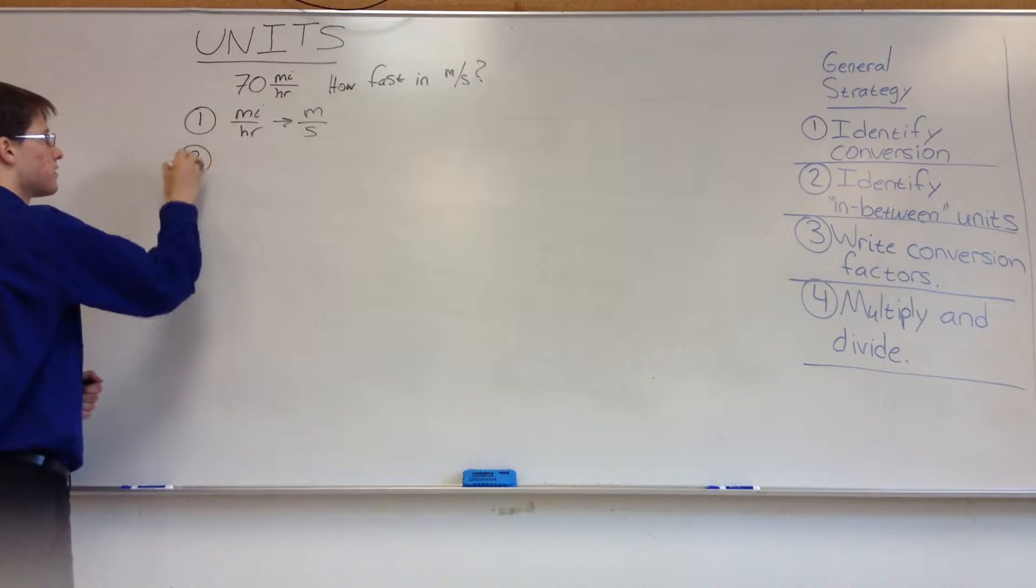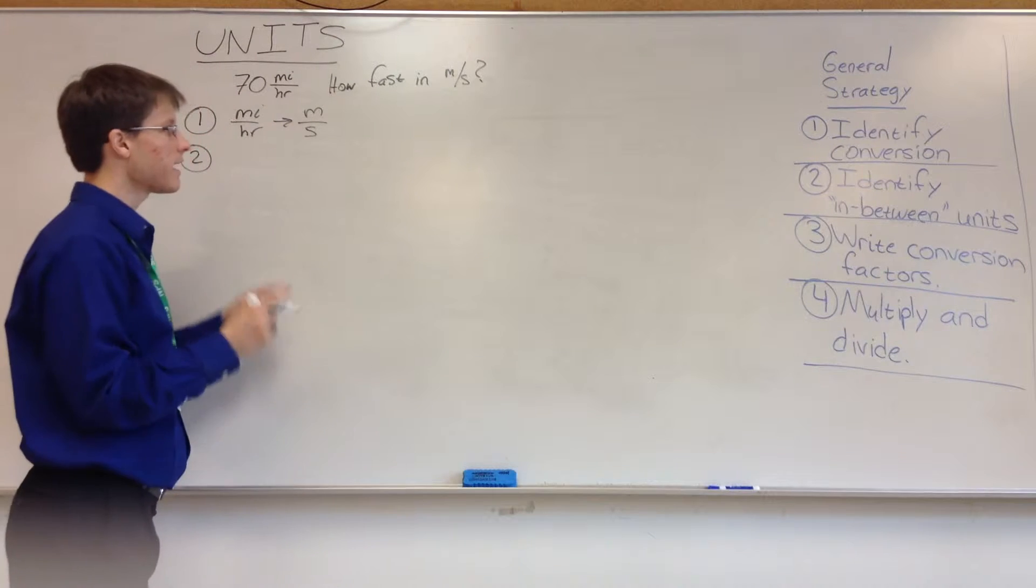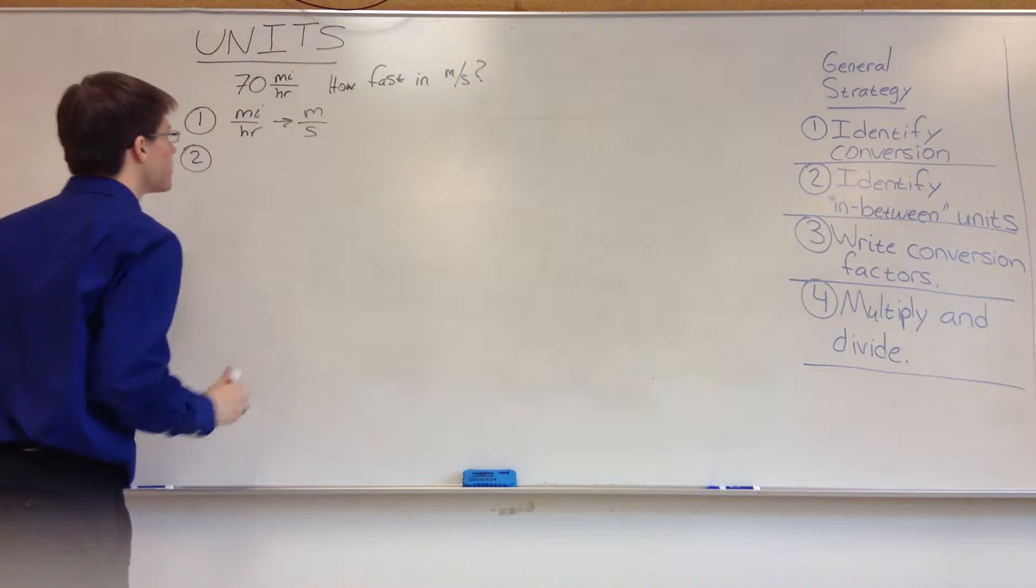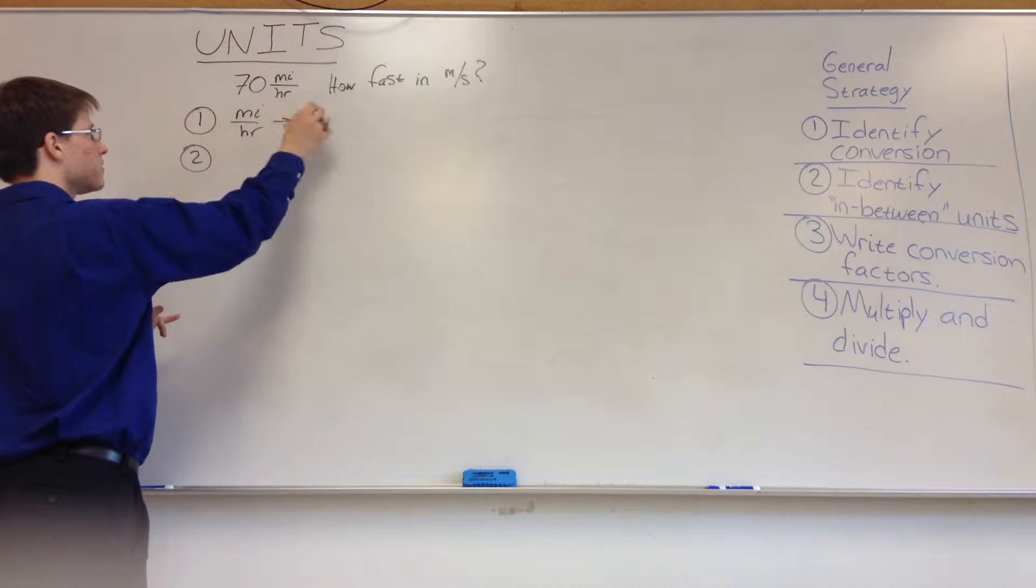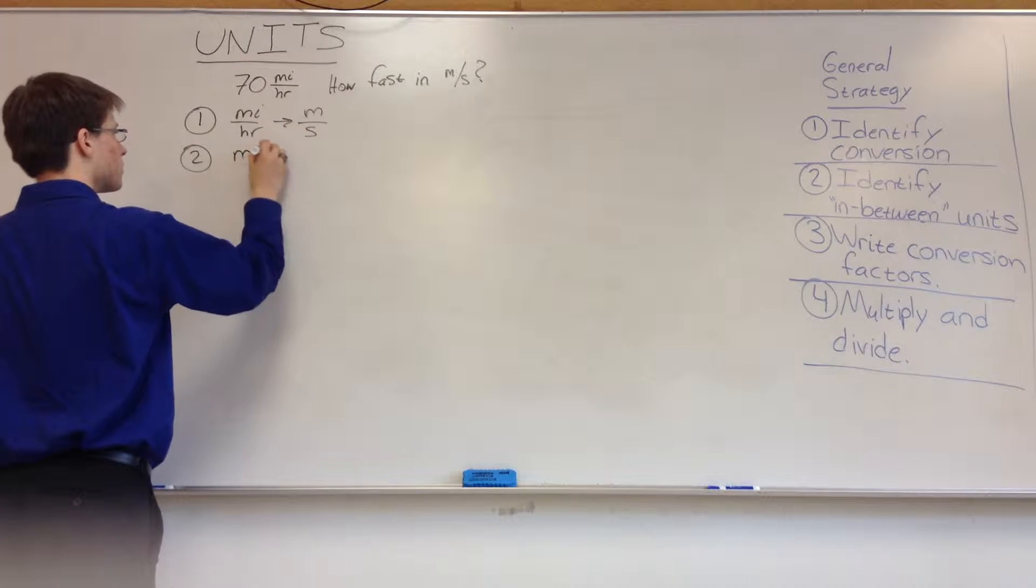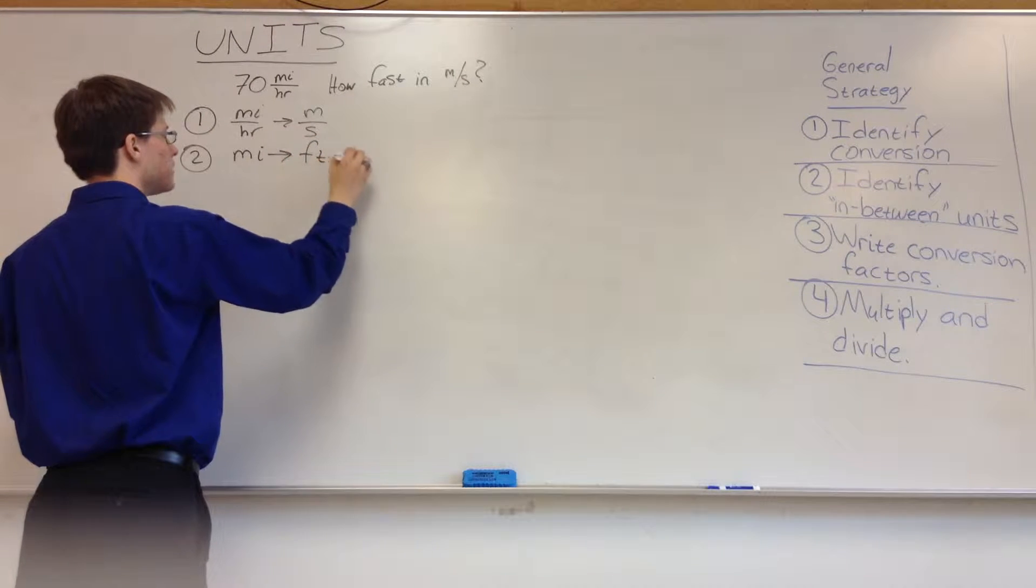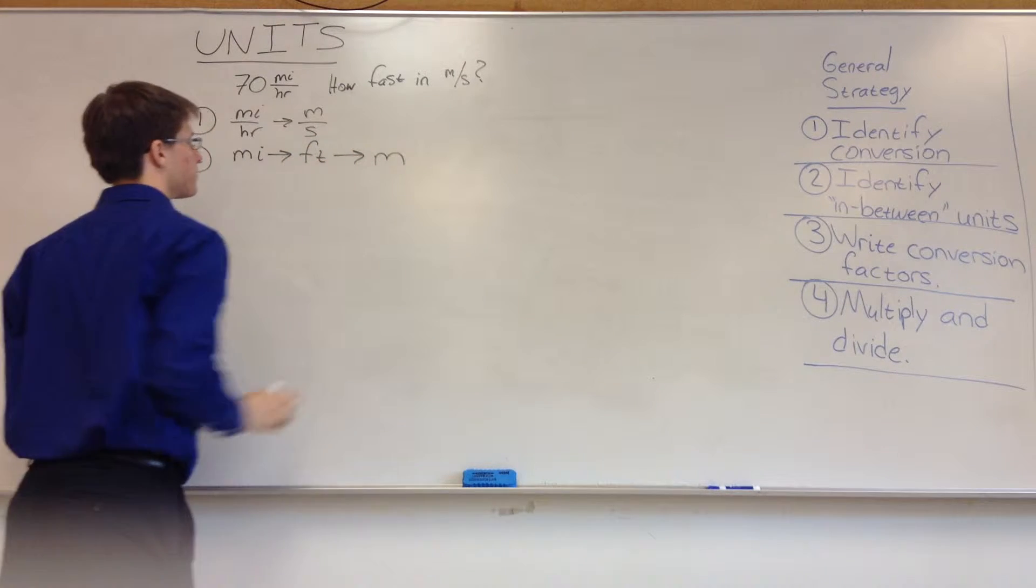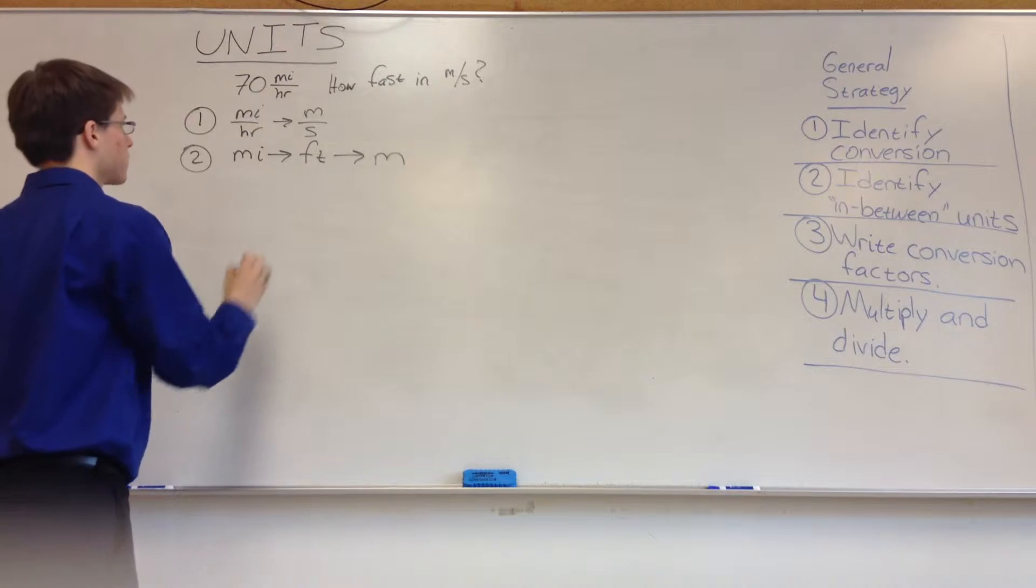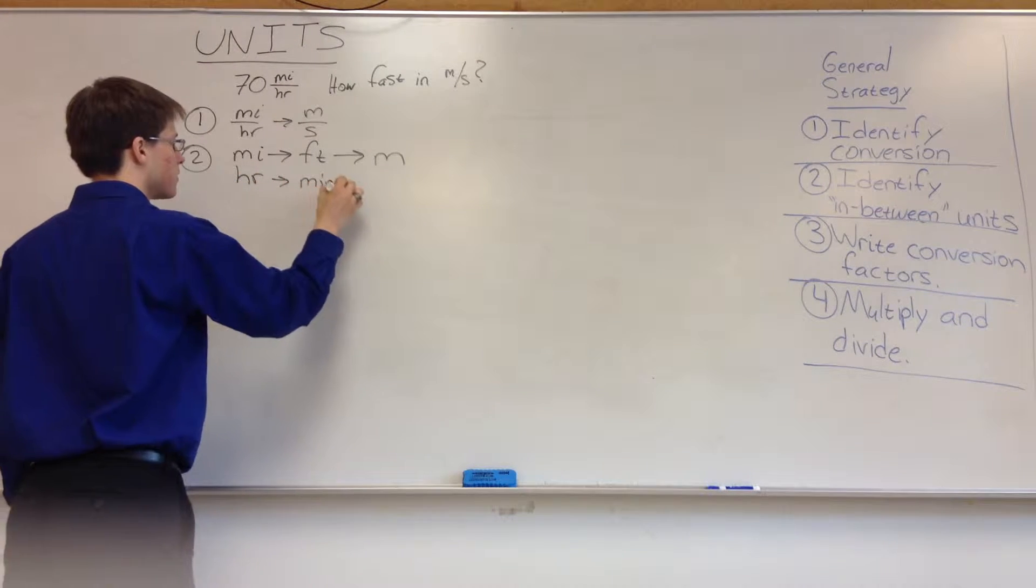Step two is to identify any in-between units. Now when you do this, you're actually going to have two trails here, you're going to have two lines. You're going to have the length units and the time units. So miles, we're going to take to feet, and feet to meters. And for time, we're going to take the hours to minutes to seconds.